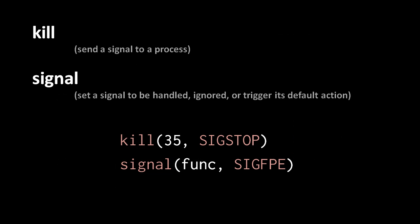The two most basic system calls associated with signals are kill and signal, which is used to register signal handlers. For example, we invoke kill to send the SIGSTOP signal to process 35, and the invocation of signal registers a handler for the current process for the signal SIGFPE, where the handler is a function called func. For security reasons, unless a process has super-user privileges, it can only send signals to processes owned by the same user.